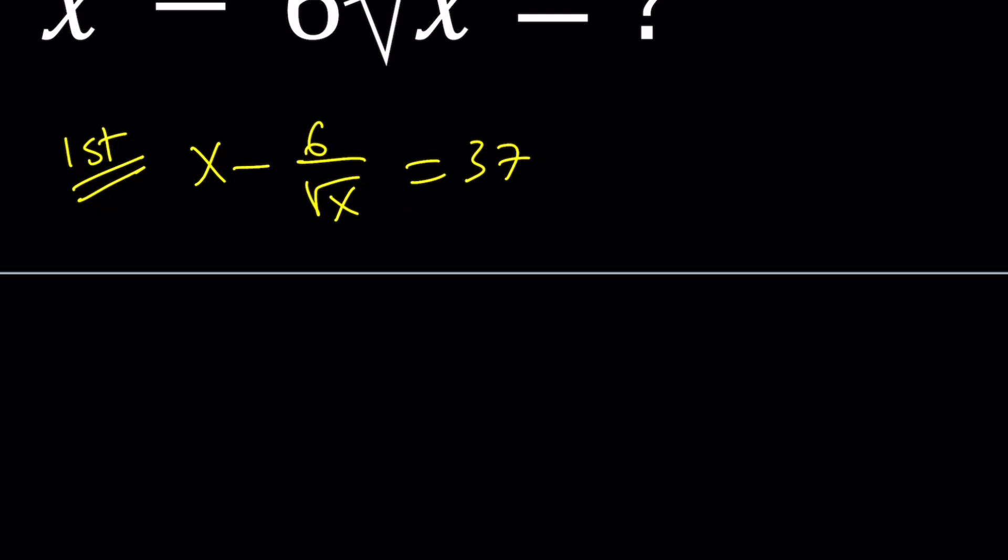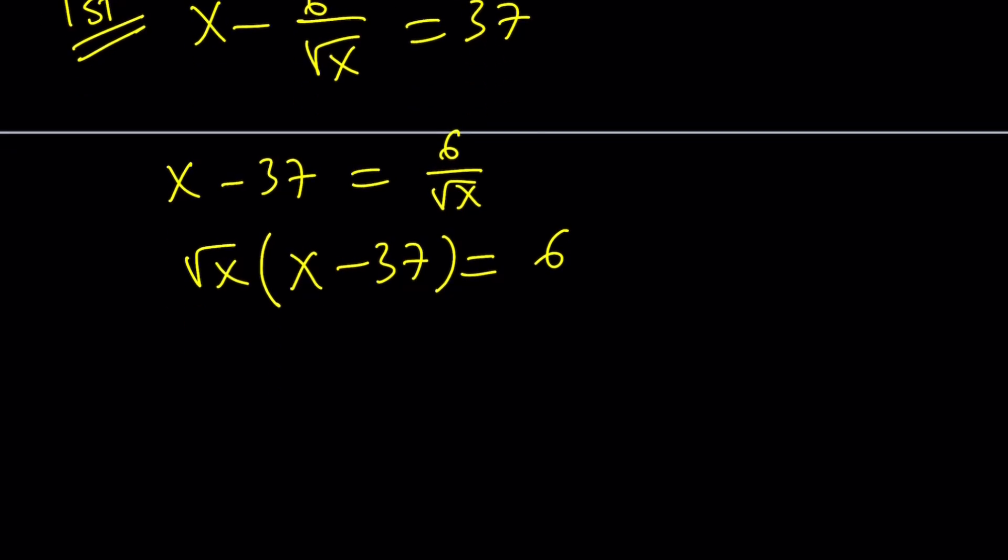So let's go ahead and subtract 37 and add the 6 over root x to both sides. And then cross multiply square root of x times x minus 37 equals 6. Let's go ahead and square both sides to get rid of the radical.